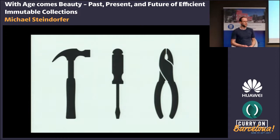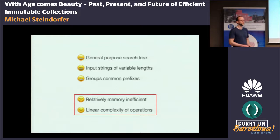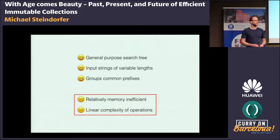What makes collection data structures interesting is that they are a general-purpose toolbox at the disposal of every programmer, because they ship with the standard libraries of these languages. As such, they should balance the time of operations and memory consumption. However, looking back at Trie data structures, they have some good sides but also negatives: they are relatively memory-inefficient and have linear time complexity for update operations. One important clarification: this is linear in the key length, not linear in the number of elements — an important distinction.